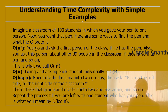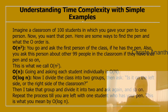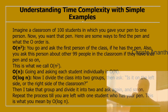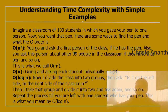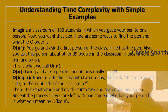Let's understand time complexity with a classroom example. A classroom has 100 students and you gave your pen to one person — now you want it back. O(n²) means you go and ask the first person if they have the pen, then the next, and the next, going through up to 99 people. O(n) means going and asking each student individually.